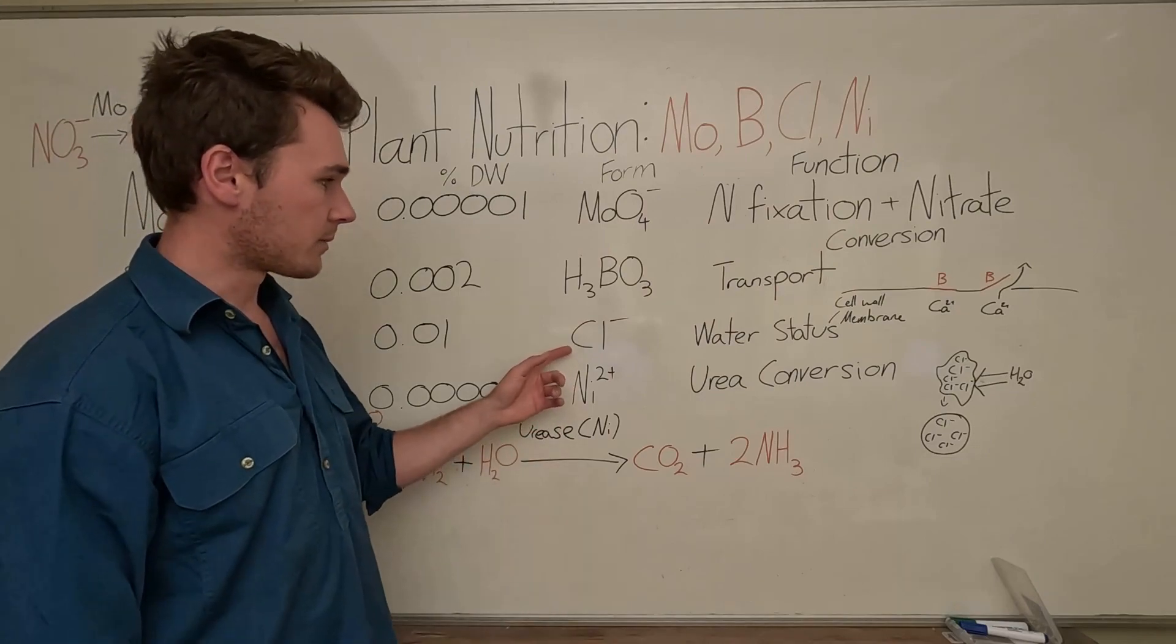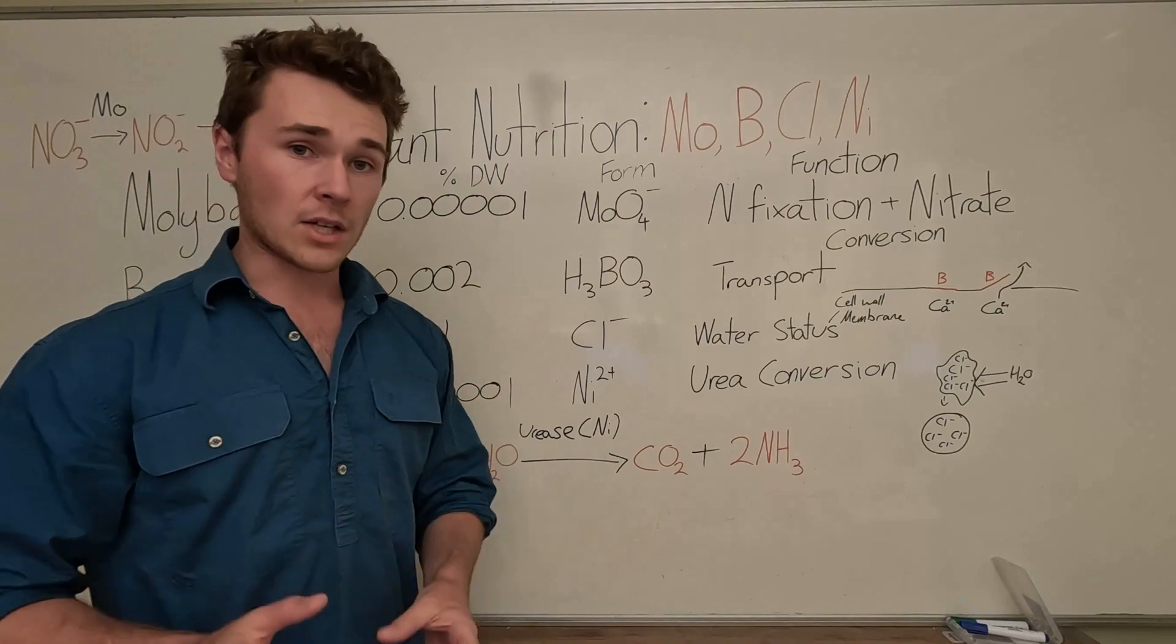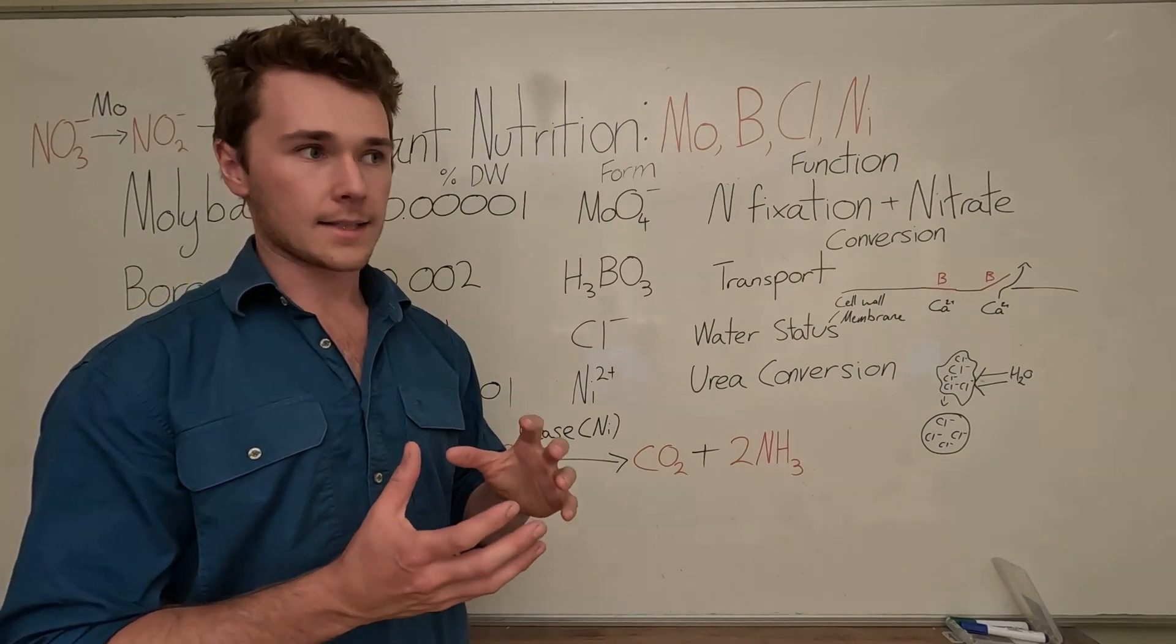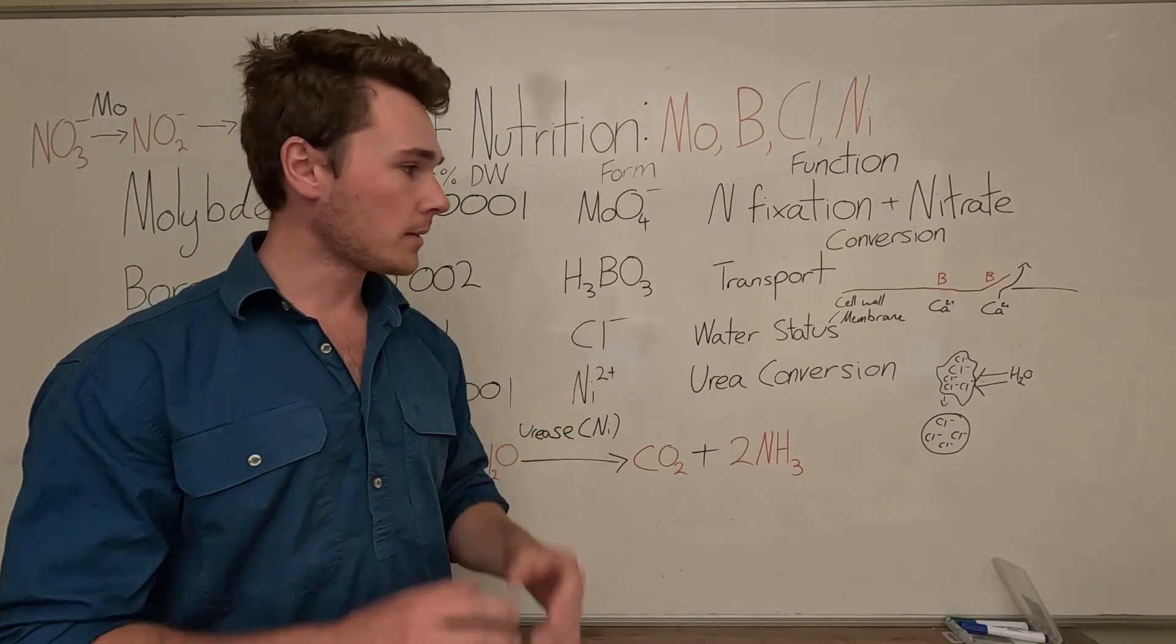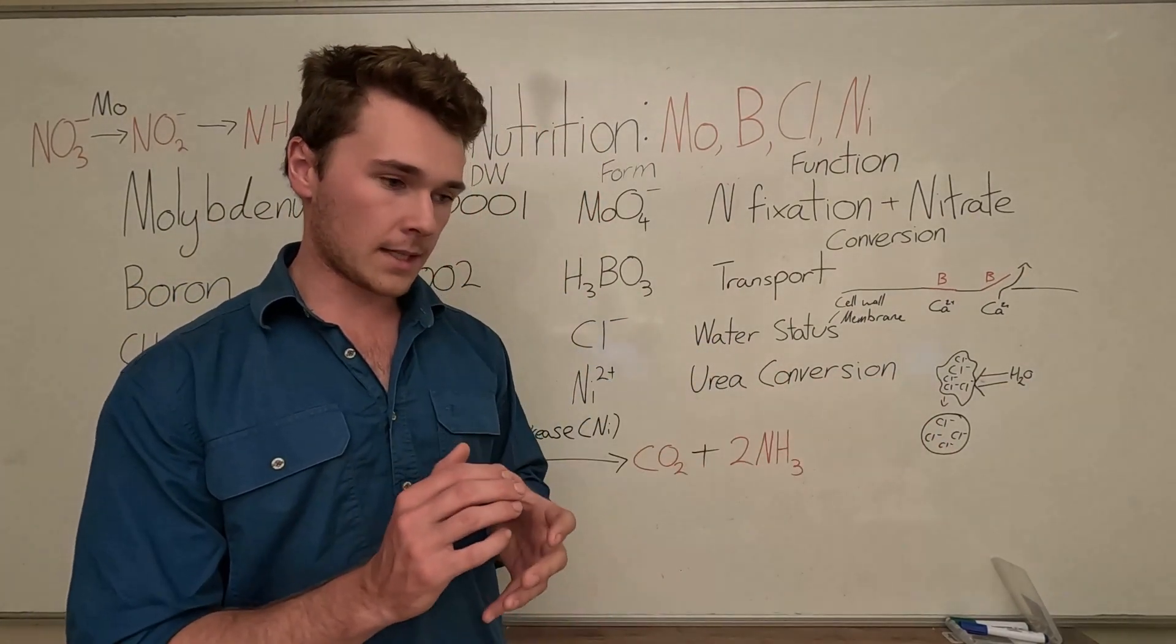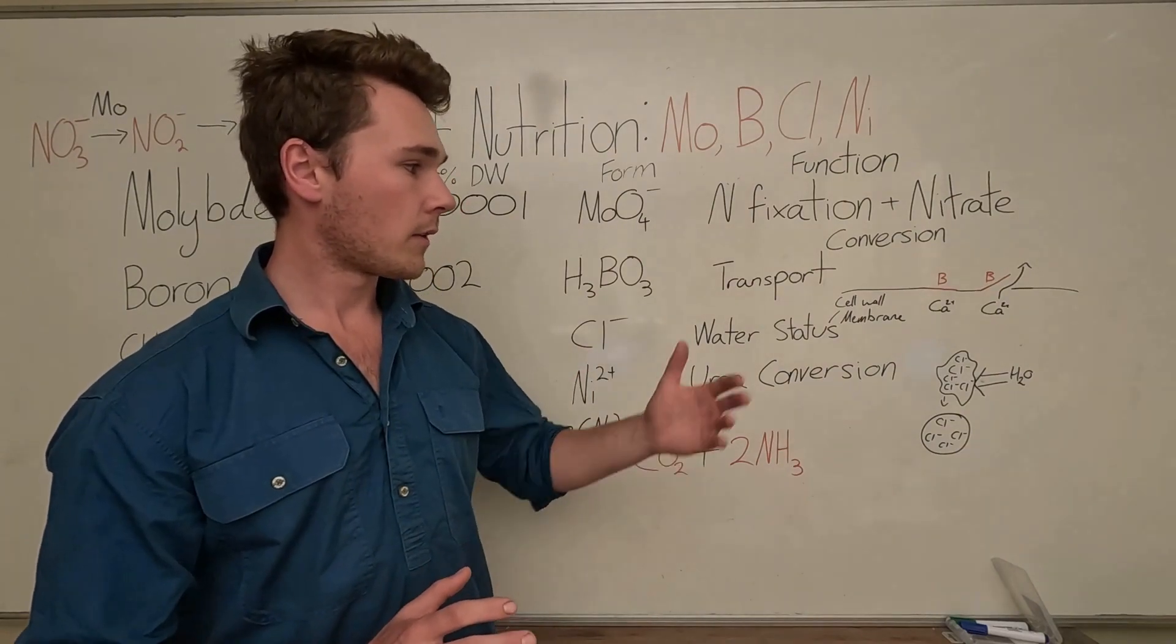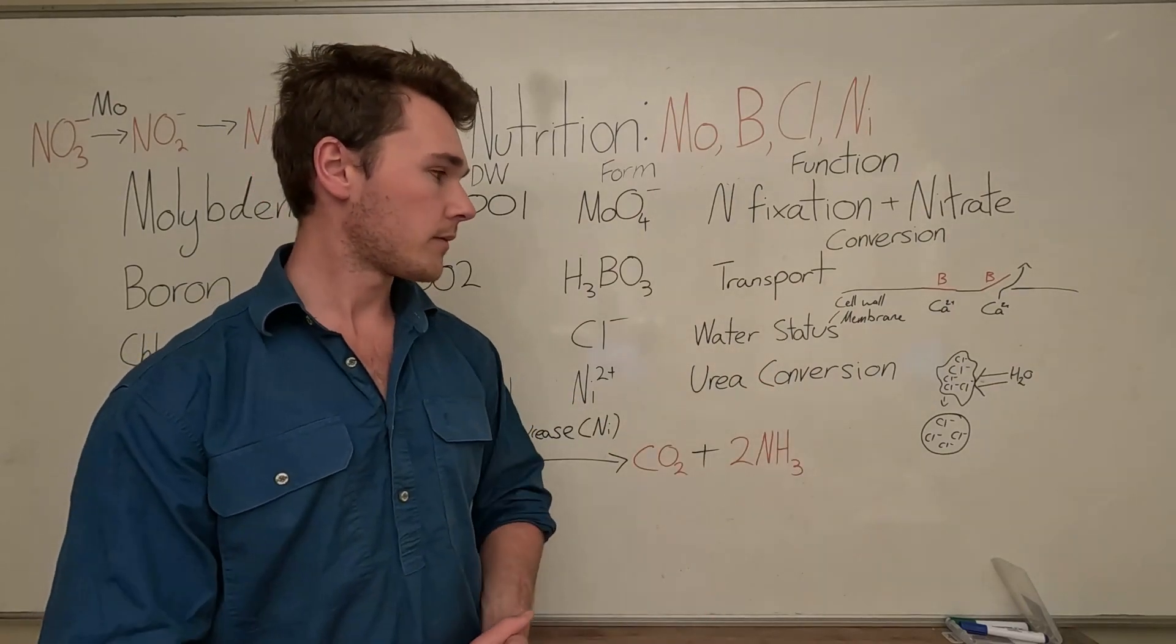It's used in a pretty high amount in the plant: 0.01 percent. It's absorbed as chloride by our plants. The main function of chloride or chlorine is in the water status of our plants, making sure the cell walls are turgid, so they're full of water.